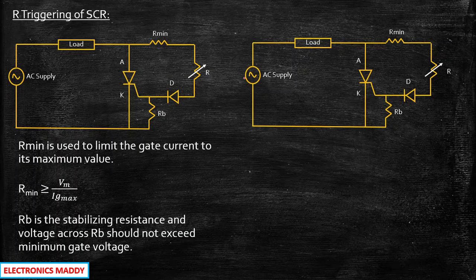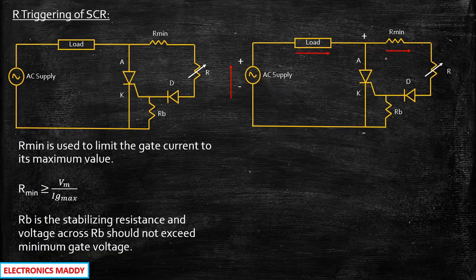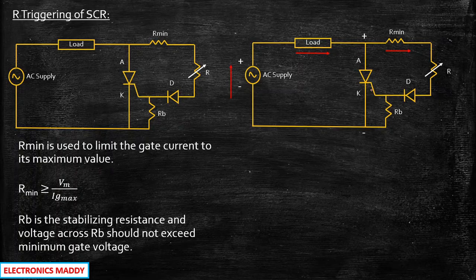Let us consider the circuit and what happens during the positive half cycle of the AC supply. This terminal is positive and this is negative. Current flows through this path, and with some voltage drop, the same voltage polarity appears across these two points. Now, current starts flowing through the resistive path. However, the current will not flow through the SCR because we have not yet given the gate supply — even though the anode is positive and cathode is negative, the required gate current has not been supplied, so the SCR is not yet turned on.